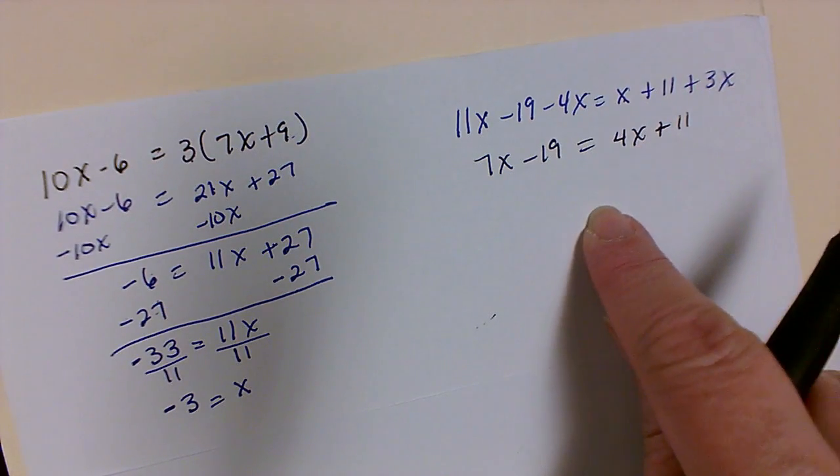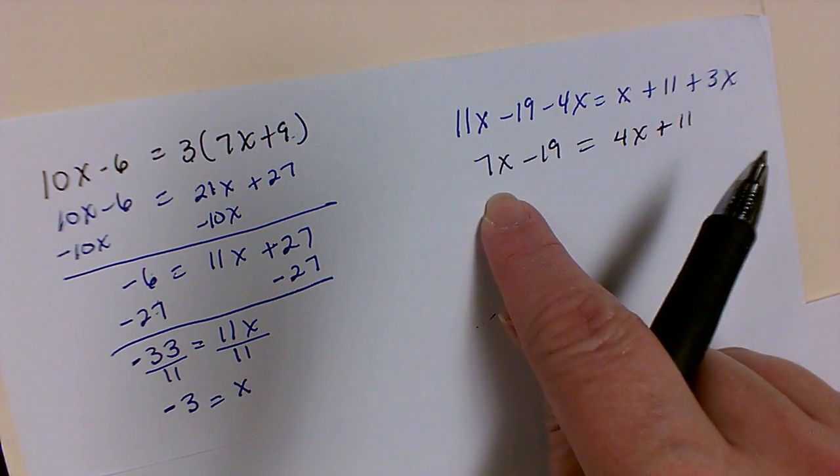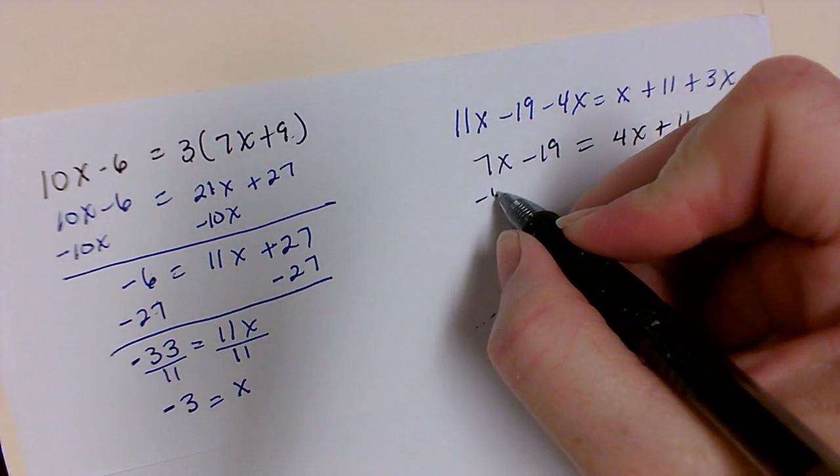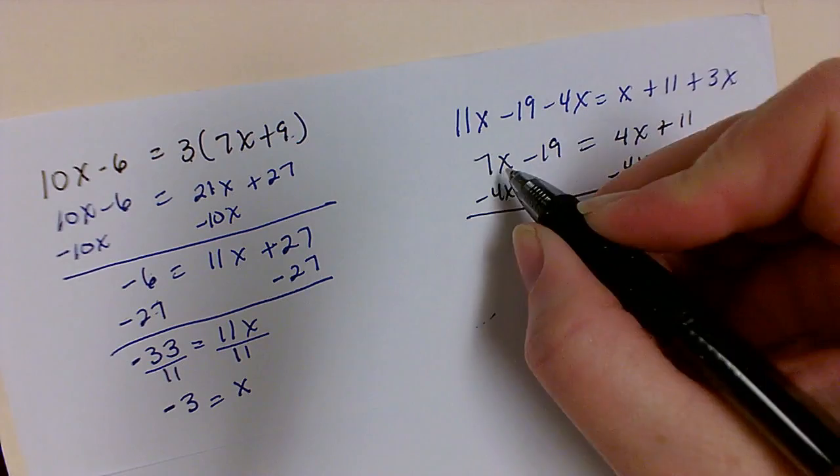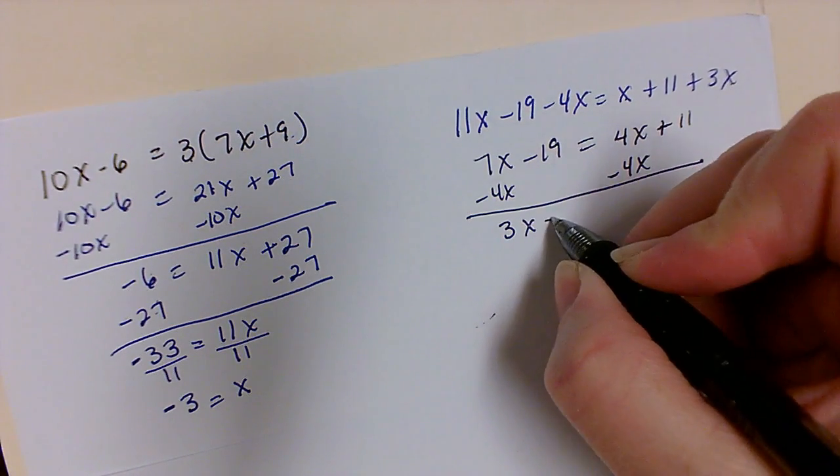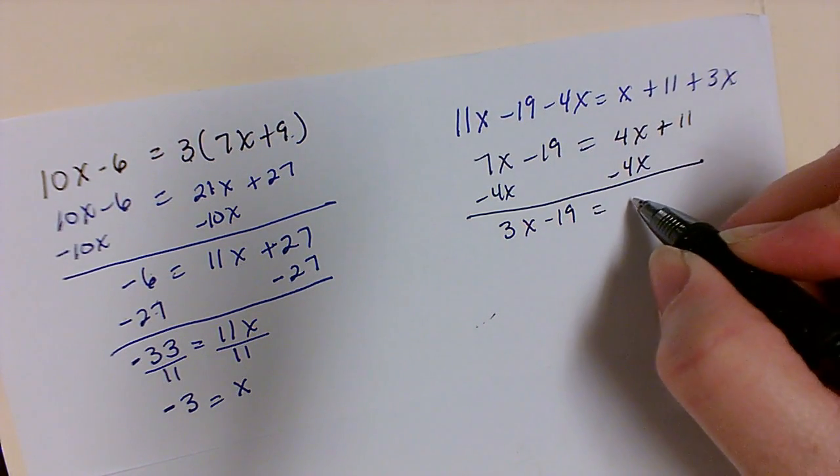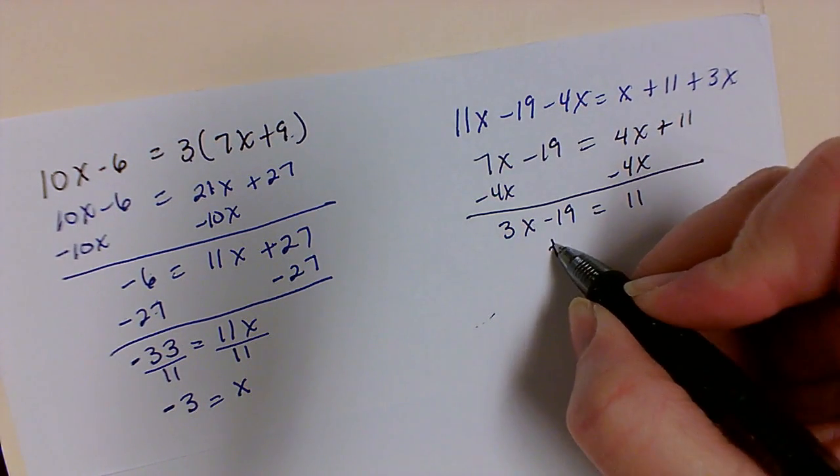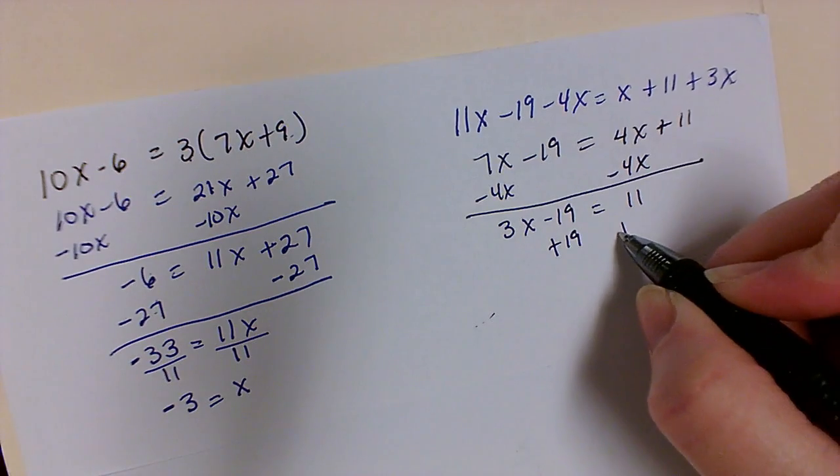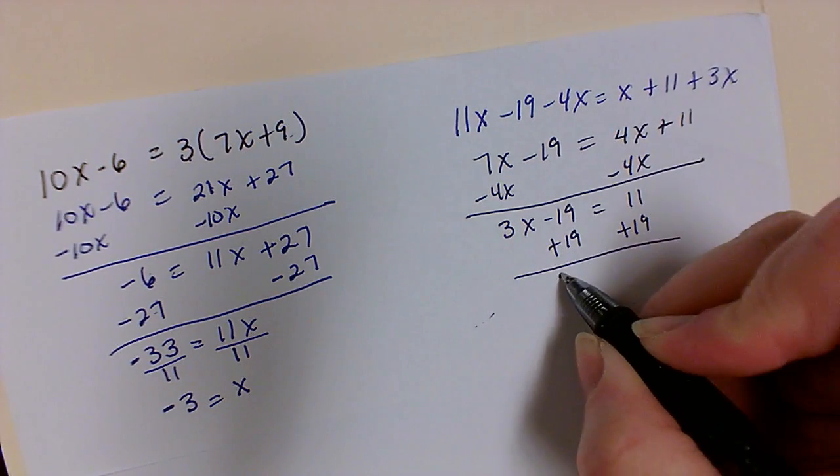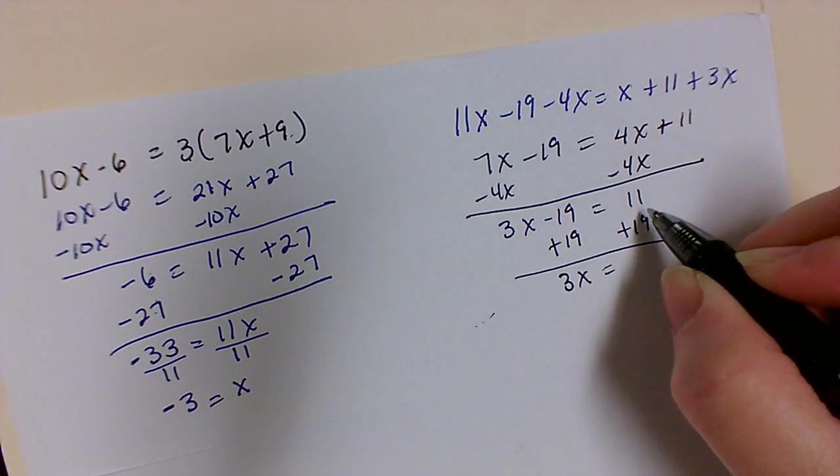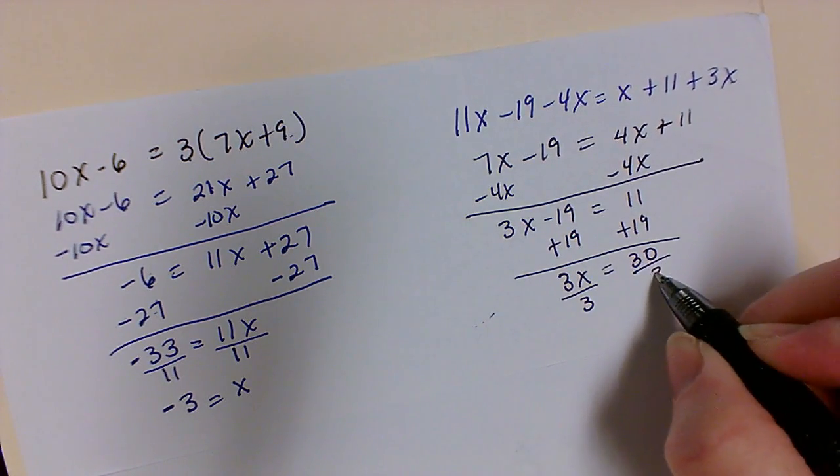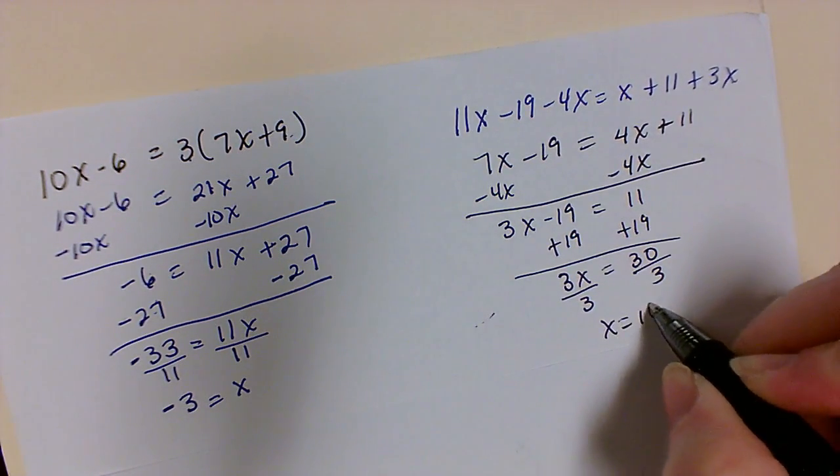I'm going to move my x this way because I have a bigger positive 7. So I'm going to minus 4x from both sides. That'll leave me with 3x minus 19 is equal to 11. Moving my number away from my variable, I'm going to add because that's the opposite of what's being done. And I get 3x is equal to 19 plus 11 will get me 30. Divide by 3, and x is equal to 10.